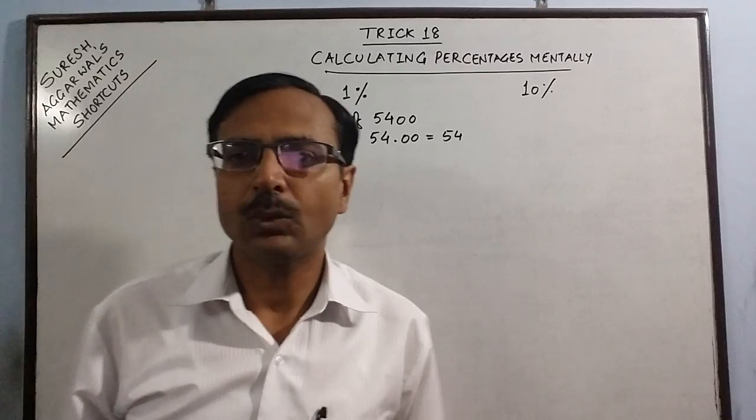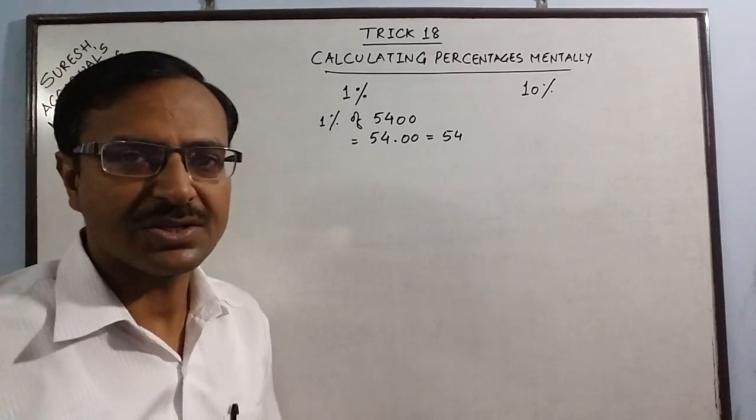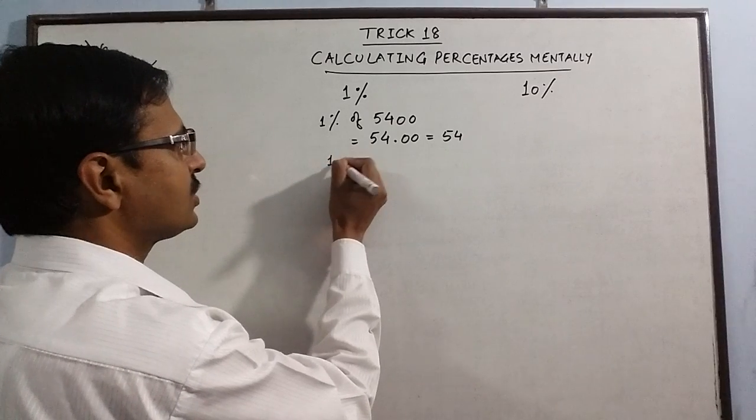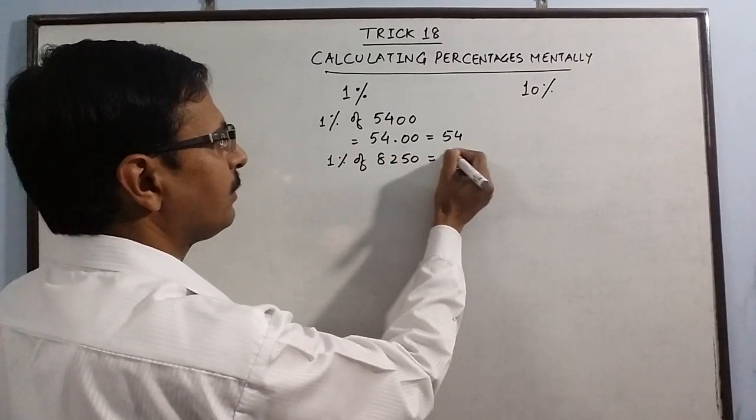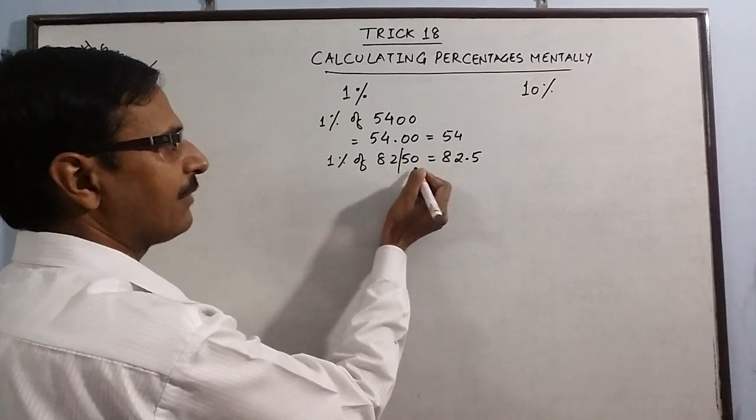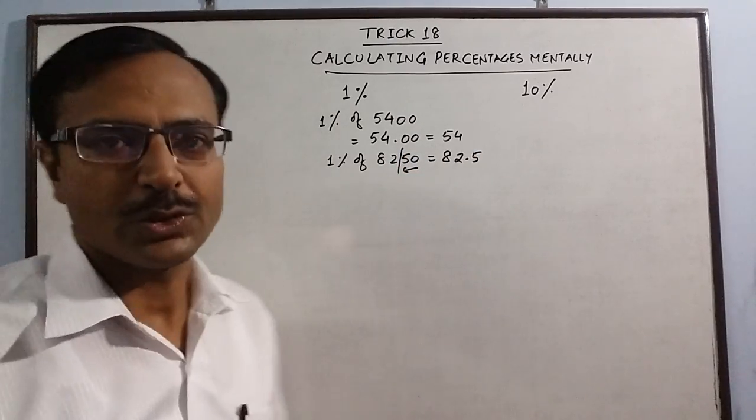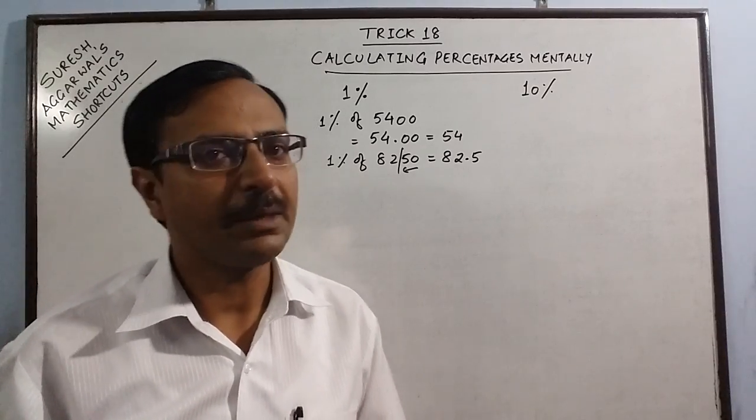Similarly you can calculate 1% of any quantity orally. You don't need to use fractions. Like 1% of 8250 is simply 82.5 because you put a decimal after two places. So this is the concept of 1% which you have to remember while calculating the remaining percentages.